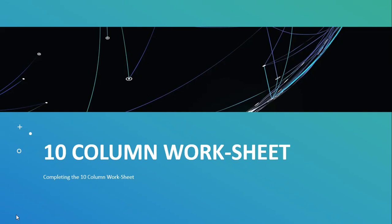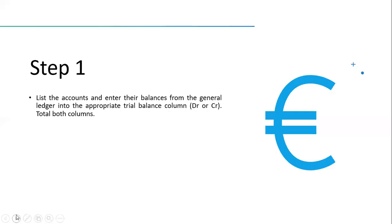We are going to see how we can prepare a 10-column worksheet and the different steps that are followed. In step one, we list the accounts and enter their balances from the general ledger into the appropriate trial balance columns — that is, the debit as well as the credit columns.